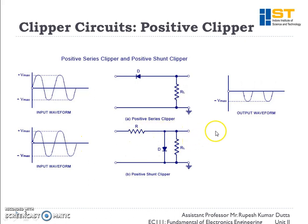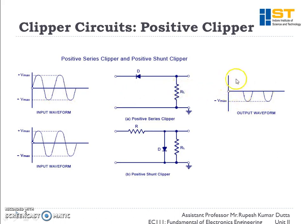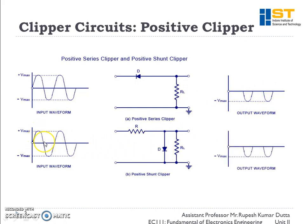In the positive series clipper, when we apply a positive voltage the diode becomes open-circuited due to reverse bias, and no signal reaches the load. In the negative half cycle, the diode becomes forward biased and all signals pass to the load. So all positive half cycles are clipped and all negative half cycles pass — this is a positive clipper.